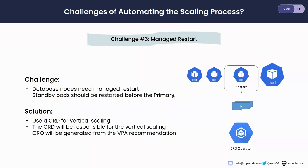This is where we cannot use VPA directly to scale our resources, because VPA won't be able to do the managed restart. To achieve this, we can use a CRD whose responsibility is to do the necessary tasks like managed restart and necessary post-completion checks. When we have recommendations to scale, the auto-scaler can create an object of this CRD to scale the workloads.